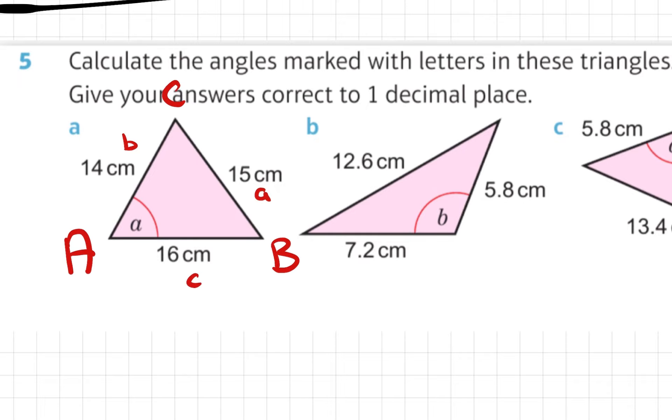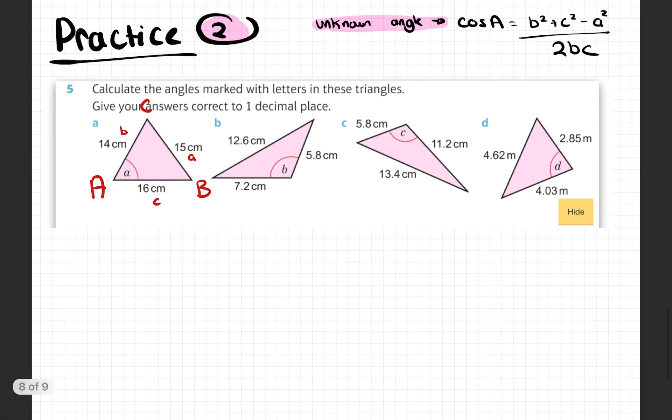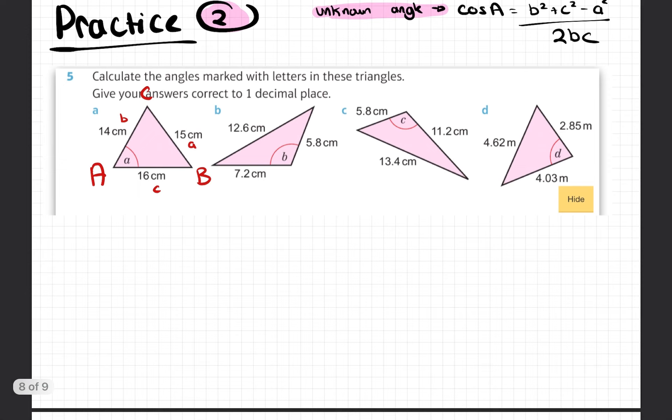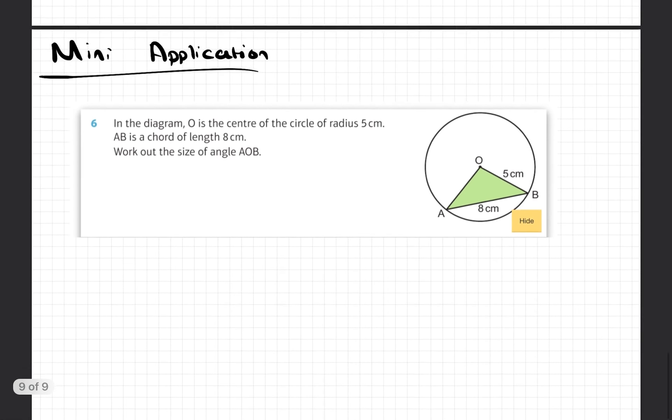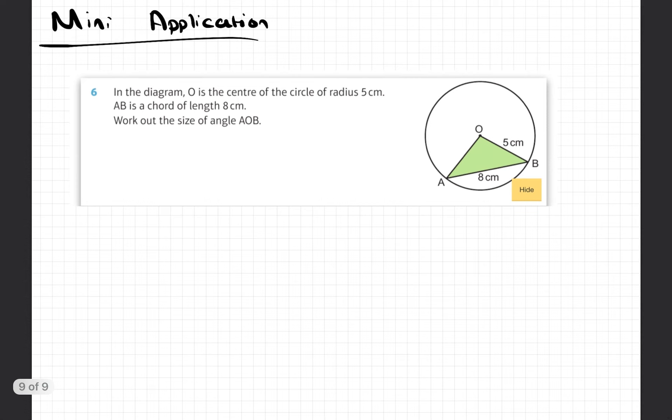Unknown side, four practice questions here. Unknown angle, four practice questions. First one, don't let this confuse you, you've got a little A, B, C. Don't let this little A confuse you. There you are, four practice questions, and then once you're done you're going to input this into a Google form, but I also want to see this mini application done.